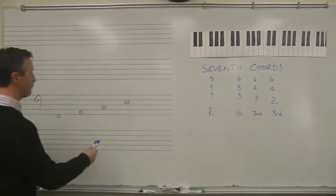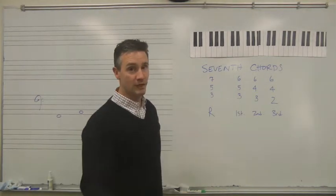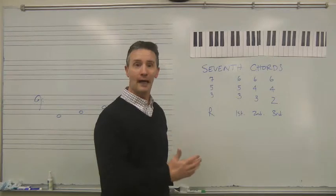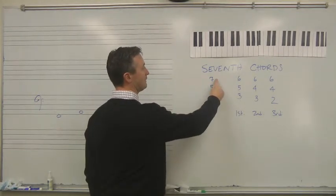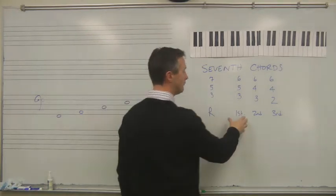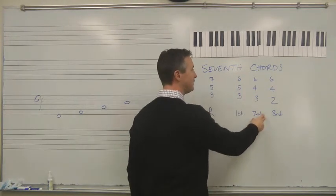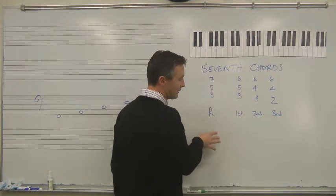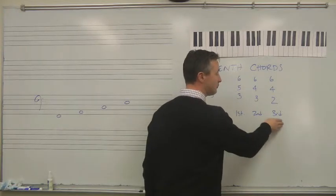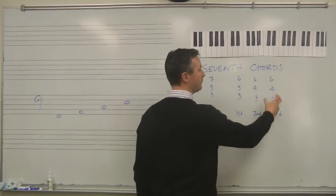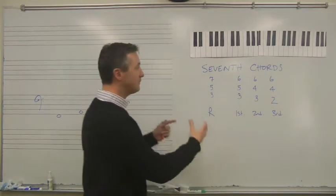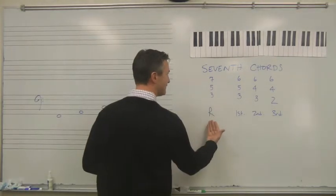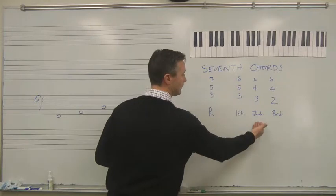So if we now take these numbers, which I've already written up for you, this is root position. For root position you have 7, 5, and 3 underneath the bass note. For first inversion: 6, 5, 3. For second inversion: 6, 4, 3. For third inversion, remember that because you have four notes you can have root position or three possible inversions before you get back to root position. So for third inversion: 6, 4, 2. These are the figures that you would see underneath the bass note to tell you that you have a seventh chord in root position, first inversion, second inversion, or third inversion.